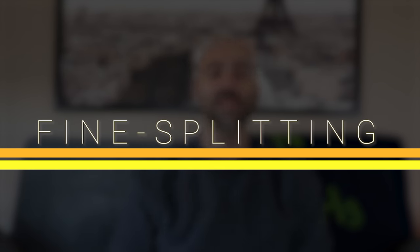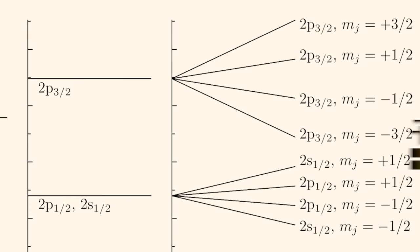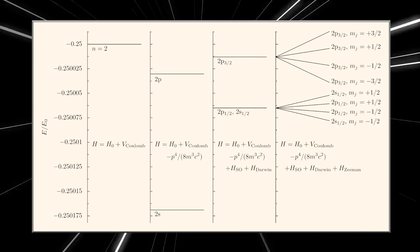We started to notice something funny with these emission lines: it wouldn't be just one specific wavelength emitted at a specific energy level. Sometimes they would get split, with tiny little differences. Instead of one wavelength of light, it was actually two very close wavelengths — if you look from far away it's just one line, but in fine detail you see two different lines. We call this fine splitting, or the fine structure of atomic lines.